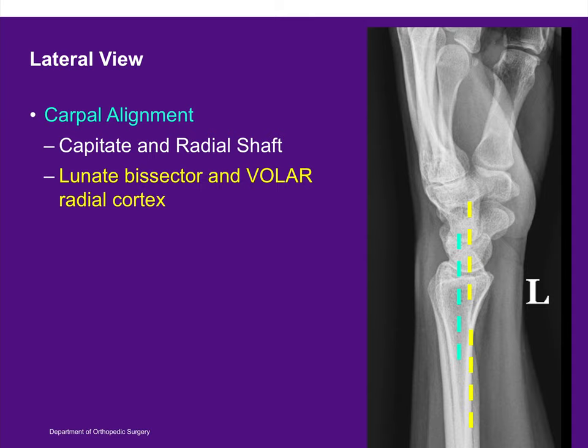On the lateral view, we can also assess carpal alignment. A line going down the middle of the radius and a line along the volar radial cortex—the volar radial cortical line—should bisect the lunate. When there is poor carpal alignment, the lunate will move palmarly away from this line. This can be a main indicator of subluxation, volar lunate escape, and a predictor of poor outcome.